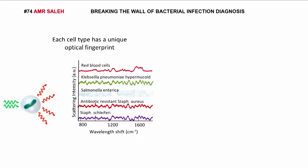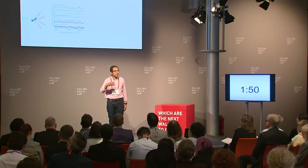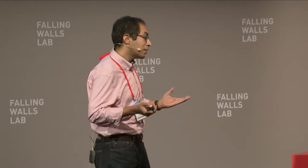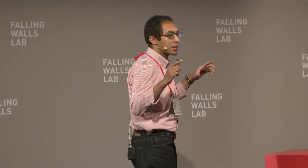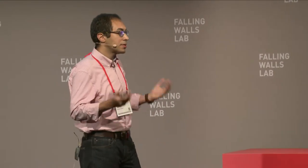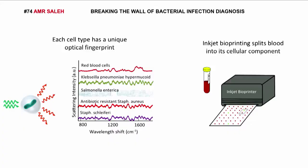Now the question is, if we have a blood sample, how are we going to scan the many cells in the blood sample for their color? Well, if you want to scan a colorful picture, the first thing you have to do is to have it first printed out. And that's exactly what I do — I use a printer, but instead of using regular ink, I actually use the blood sample to make this printout. And then we can scan.